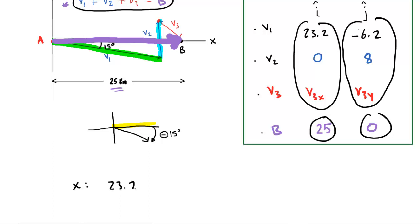So we'll have for the X component, 23.2 plus zero plus V3X is going to equal 25. Now you should be able to easily solve for the X component of vector 3. And when you do so, you would get 1.82 approximately. And now we'll do a similar exercise for the Y components. We'll take the negative 6.2, add 8, add the Y component of vector 3 and then set this equal to zero. And again, this should be a relatively easy equation to solve. So you'll add the 6.2 over to the other side and then subtract the 8. When you do that, you get negative 1.79 approximately.